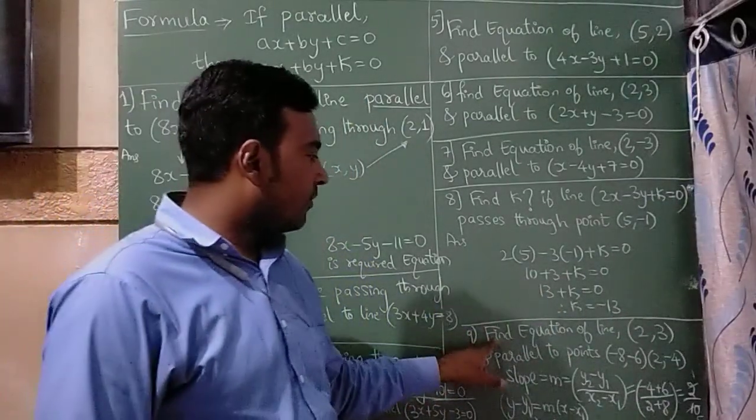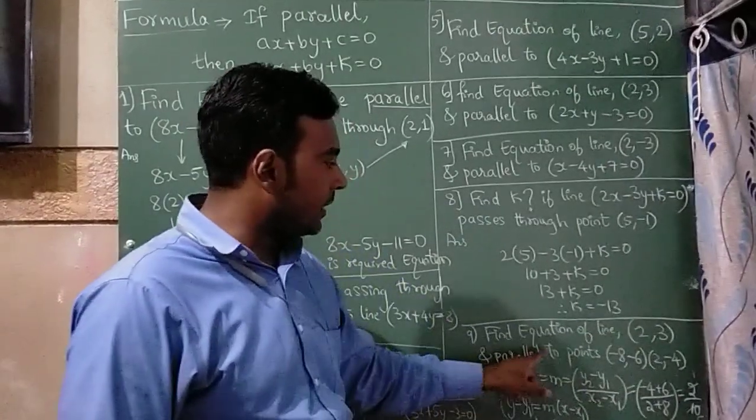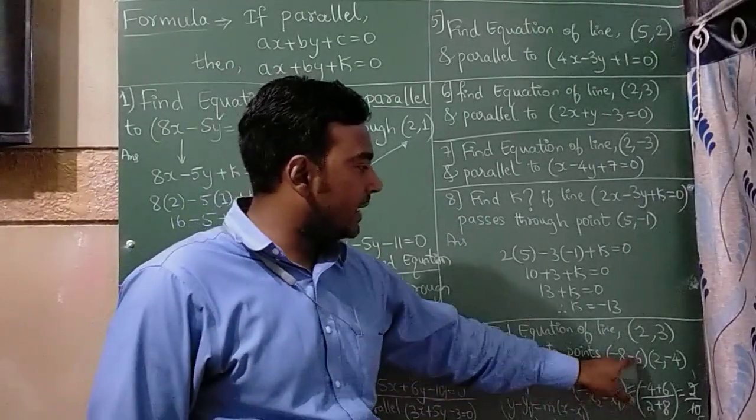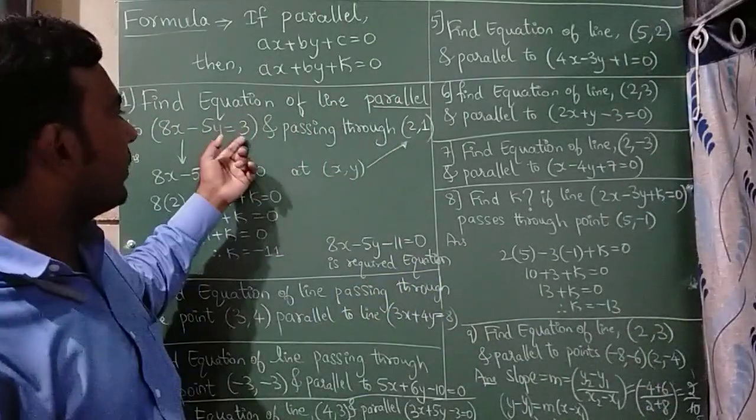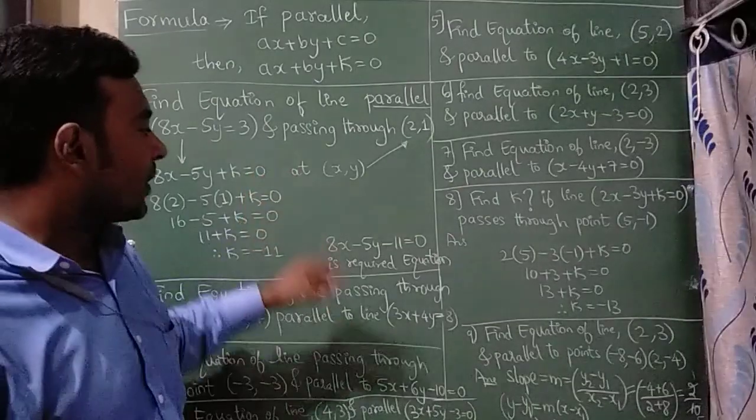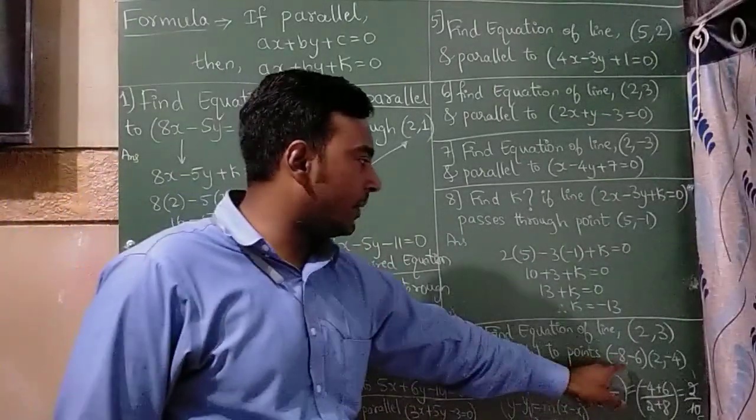The last question is find the equation of the line 2 comma 3 and parallel to the points minus 8 minus 6 and 2 minus 4. This question is little different from the first question. Here they have given the line but here they have given pair of points.